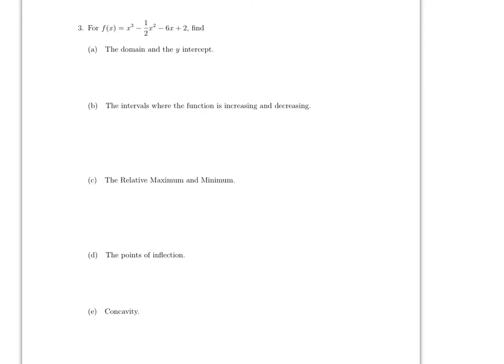What is the domain? Since this is a polynomial — for x³, when we did this in pre-calculus, you only look at the biggest power. The domain is from negative infinity to infinity. The y-intercept just means x equals 0. So if x equals 0, what is y? 2. That's it.